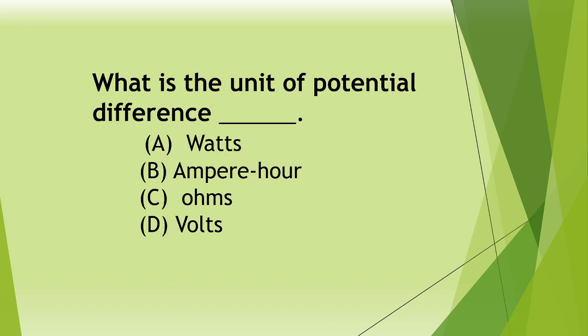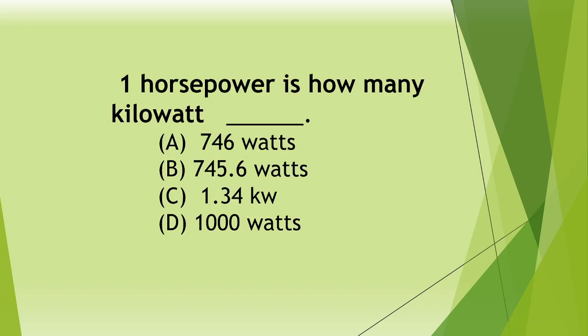Next question. What is the unit of potential difference? A watts, B amperes, C ohms, D volts. Answer: D volts.